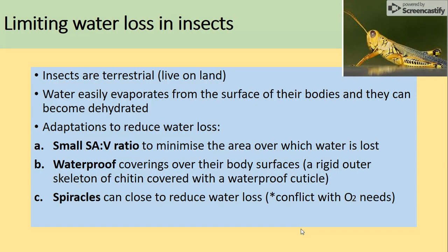So let's start with the insects - limiting water loss in insects. Insects will live on land, so we call them terrestrial. Water can evaporate really easily through the surface of the body and they can of course become dehydrated. So what are the adaptations to reduce water loss in insects? We've mentioned that in our insects video.